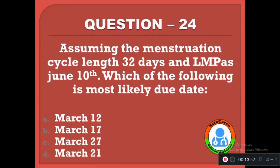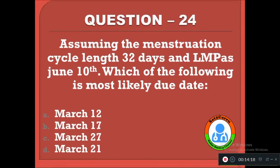Question 24: Assuming a menstrual cycle length of 32 days and the last menstrual period date was June 10th, which of the following is the most likely due date? Options: March 12, March 17, March 27, or March 21. The correct answer is March 17.